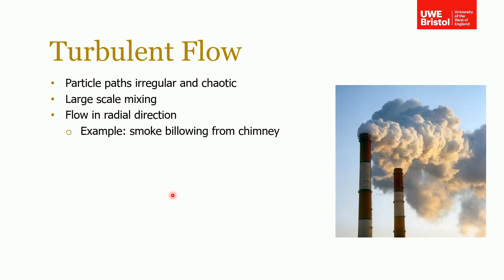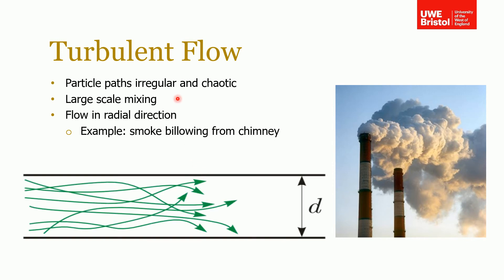At the other end of the scale is turbulent flow, where the paths are irregular and chaotic, as can be seen from the schematic. There's no regular distribution of flow velocity across the diameter; the fluid motion is quite chaotic with a lot of mixing. A good example is smoke coming out of a chimney — even in a crosswind, it's very turbulent with a lot of mixing and wrinkled edges on the side of the plume, which are characteristics of turbulent flow.